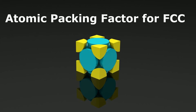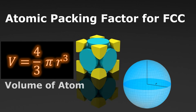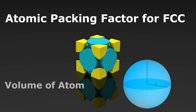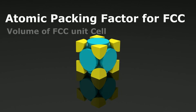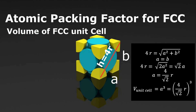The volume of a spherical atom is equal to 4/3 π r³. When we draw a line from one corner to another corner along a face diagonal of this cube, the length of that line will be equal to 4r. Using the Pythagorean theorem, we can measure the length of the side of this cube.